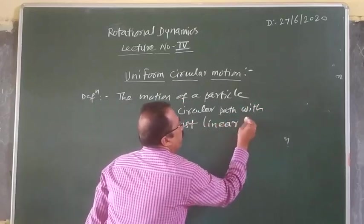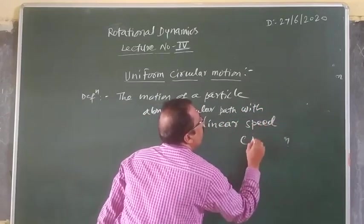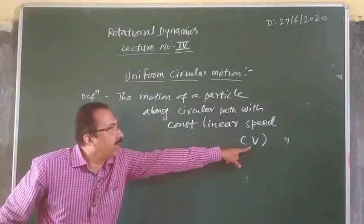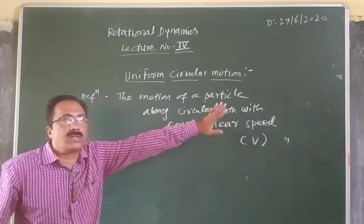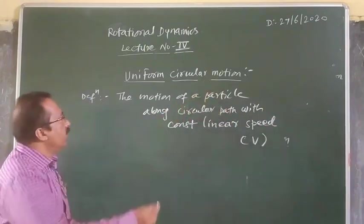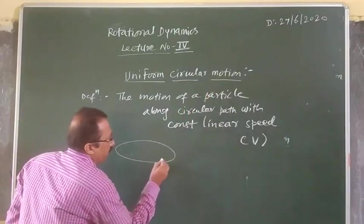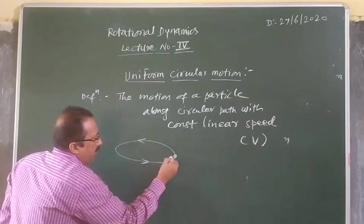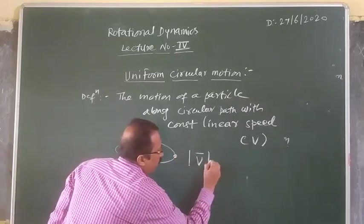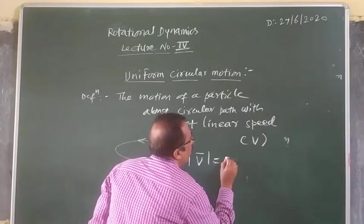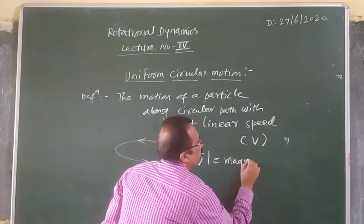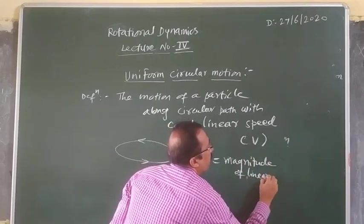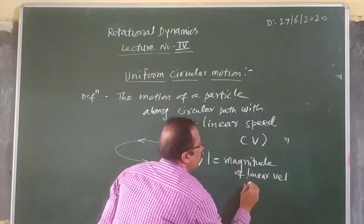With constant linear speed, the motion of a particle along circular path with constant linear speed.